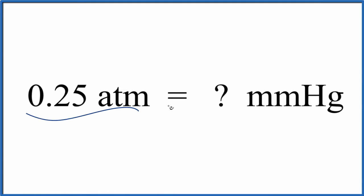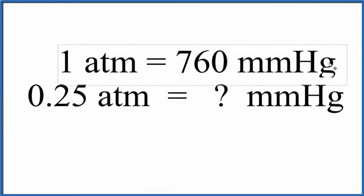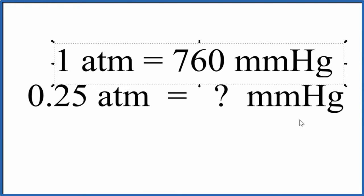Let's convert 0.25 atmospheres to millimeters of mercury. And we'll do it two ways. But for either way, you do need to know that one atmosphere is equal to 760 millimeters of mercury. So that's just something you need to know.